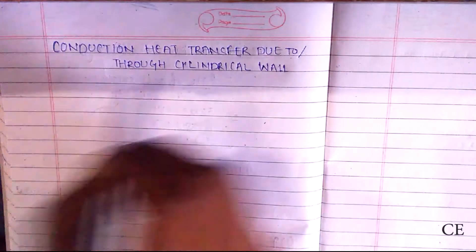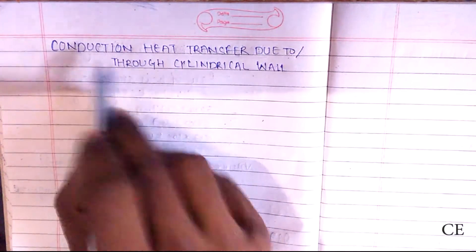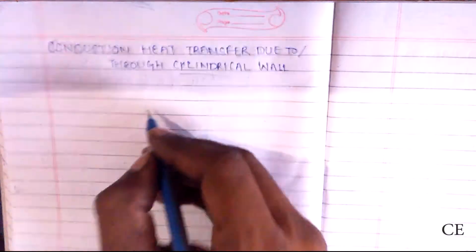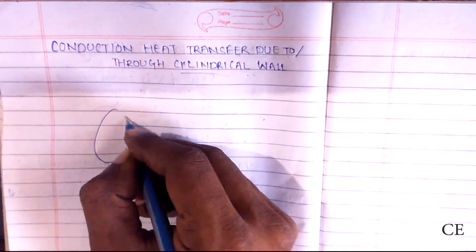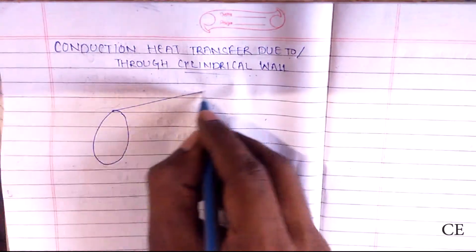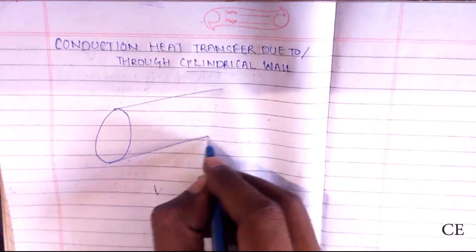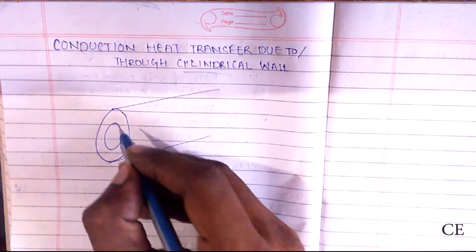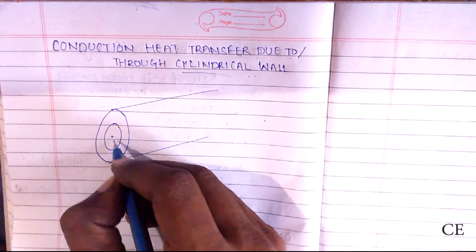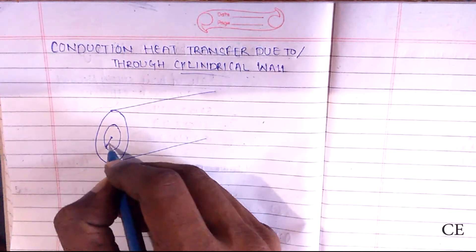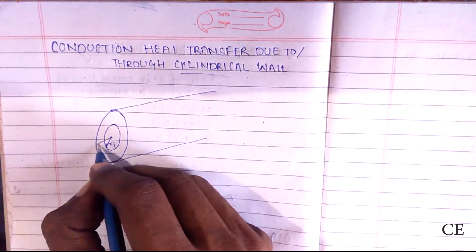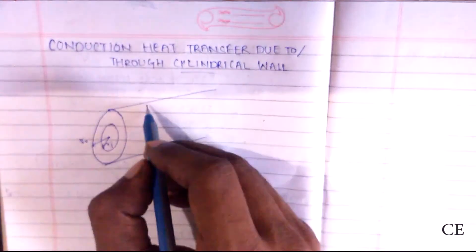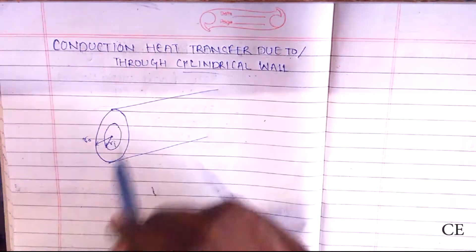Today we are going to talk about conduction heat transfer through cylindrical walls. Consider a cylindrical object — it has an inner surface with radius Ri and an outer surface with radius Ro.